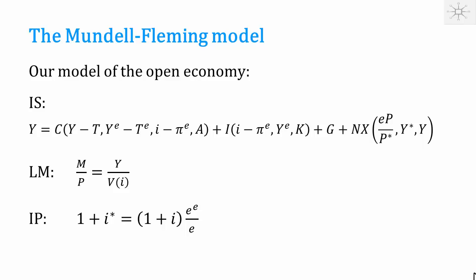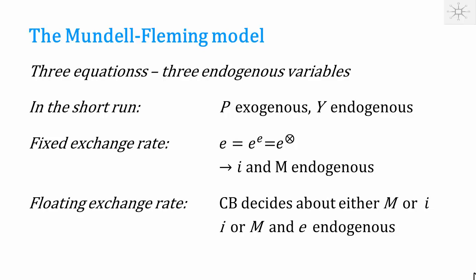If you instead have a floating exchange rate, then the central bank can set either the money supply or the interest rate. You can then view the interest parity condition as an equation determining the exchange rate endogenously. With a floating exchange rate, the endogenous variables are Y and E, and then either M or I. This is a mathematical explanation — let's think more about the economics.